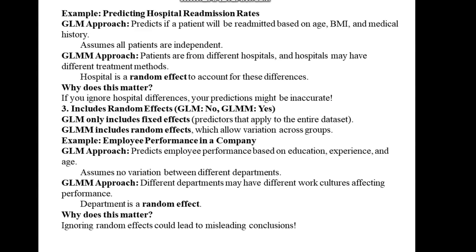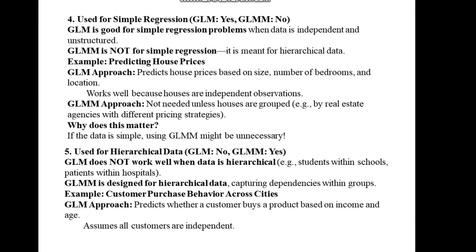Third, random effects: GLM only includes fixed effects — predictors that apply to the entire dataset — while GLMM includes random effects, which allow variation across groups. For example, predicting employee performance in a company: the GLM predicts based on education, experience, and age and assumes no variation between departments, while the GLMM accounts for the fact that different departments may have different work cultures affecting performance — so department is a random effect. Ignoring random effects could lead to misleading conclusions.